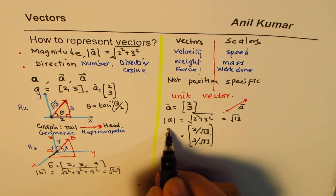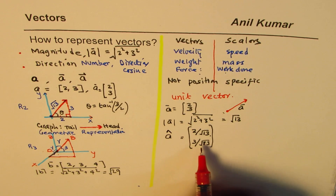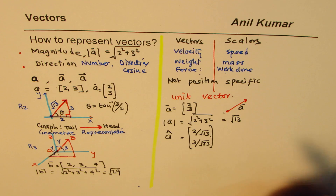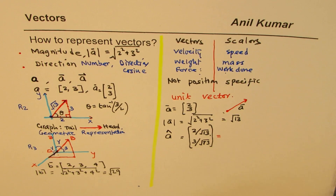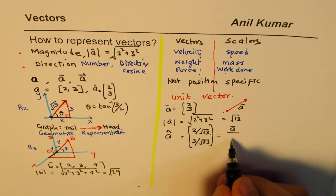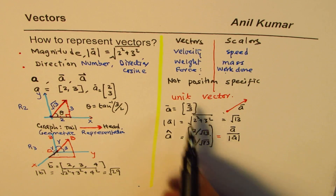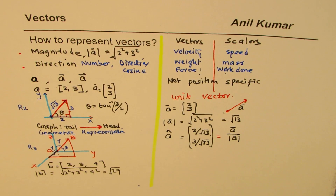Dividing by the magnitude gives a unit vector. We represent it with a hat symbol. So the unit vector equals the vector divided by its magnitude. To find a unit vector, divide by the magnitude.